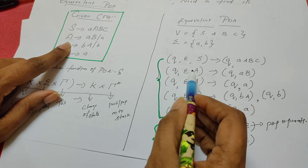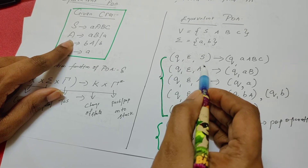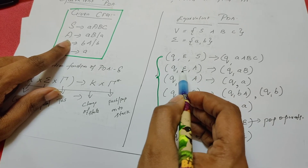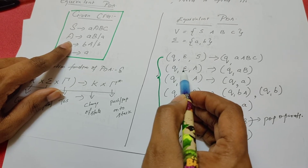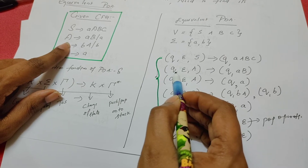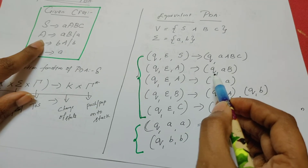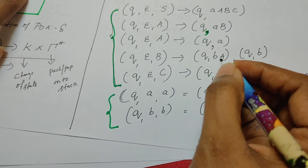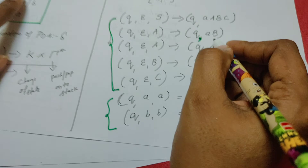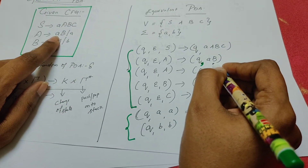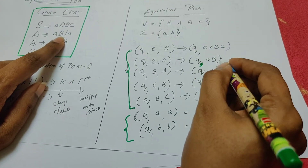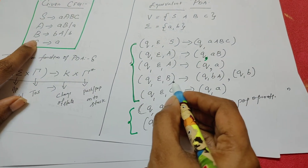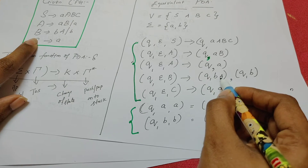Once again, to remind you why we write epsilon: if the top of the stack contains a variable, then we do not read anything from the input tape — that is indicated by epsilon. So Q, epsilon, A — the change of state is once again Q, and whatever is given on the right-hand side of A you write there. On the right-hand side of A there are two options: A, B or A. Both rules have been included. Similarly, for variable B, we have written Q, epsilon, B going to Q, B, A and also Q, B.